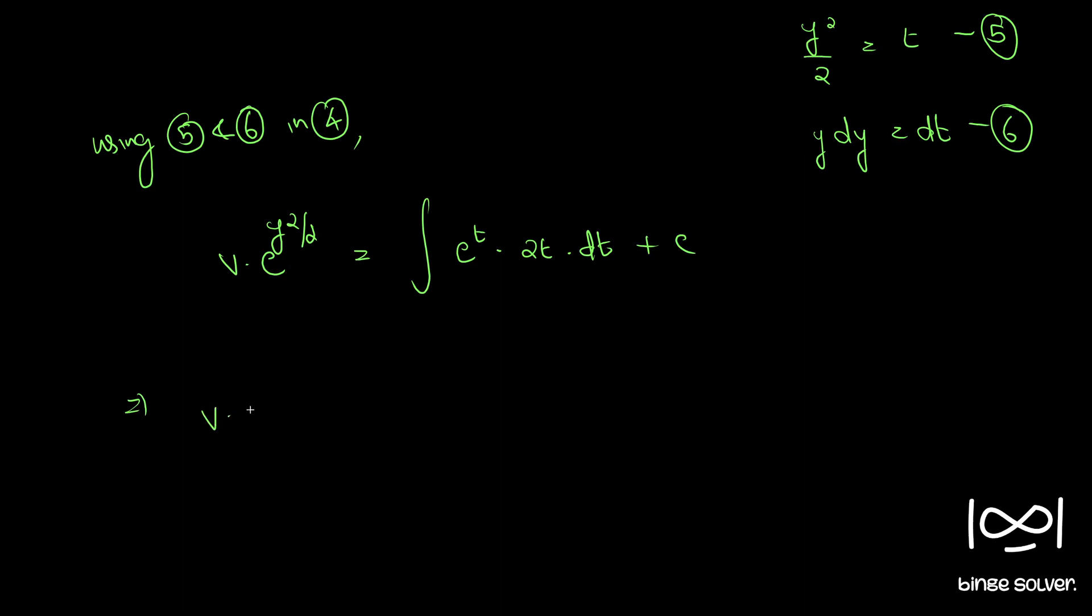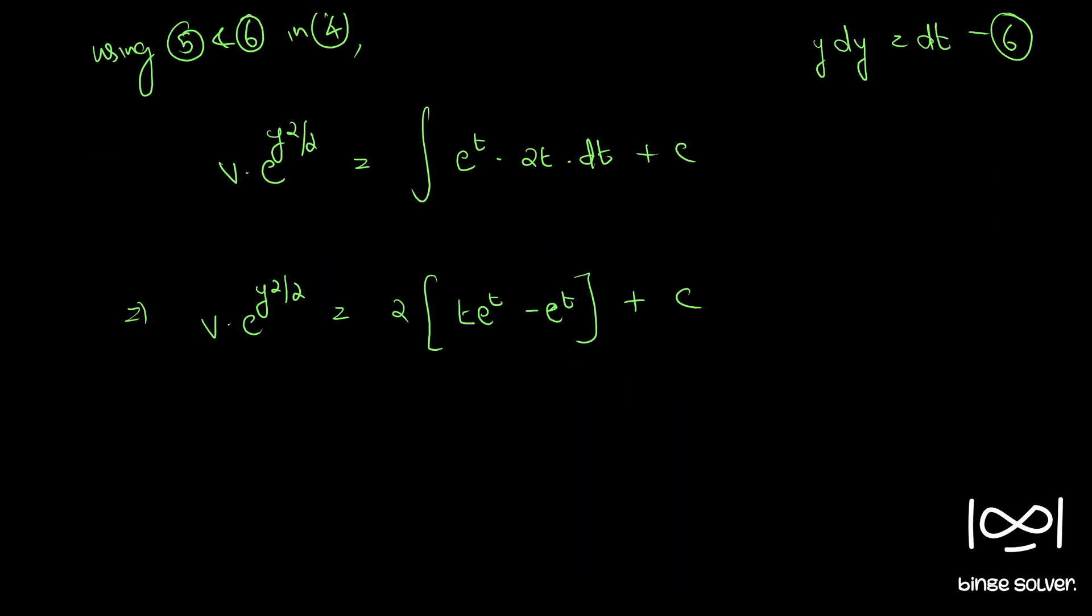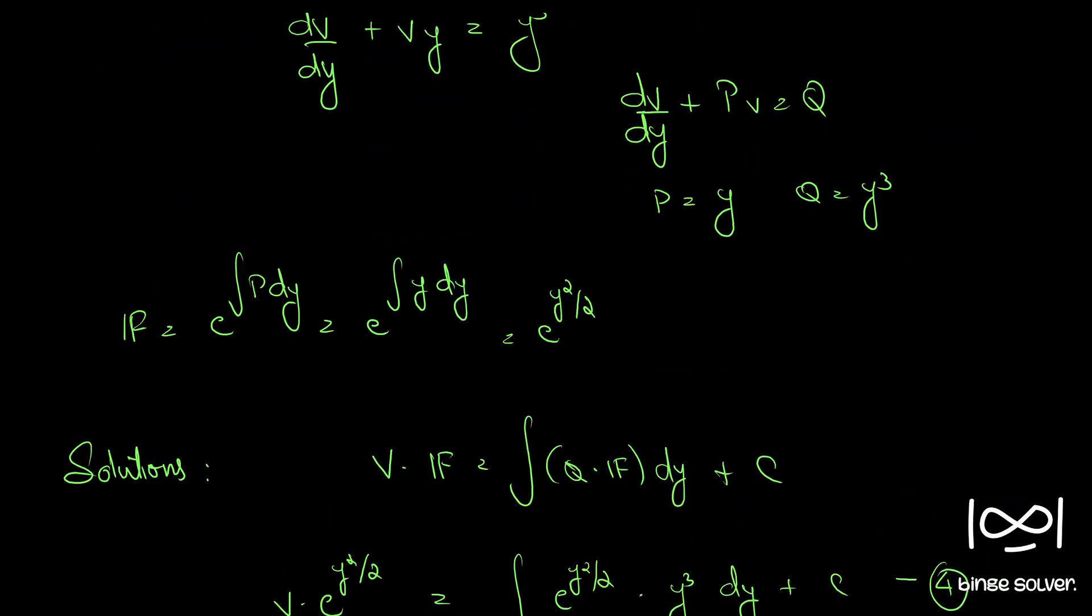So v e raise to y square by 2 equal to 2 integral e raise to t times t dt, which becomes t e raise to t minus e raise to t by integrating by parts, plus c.